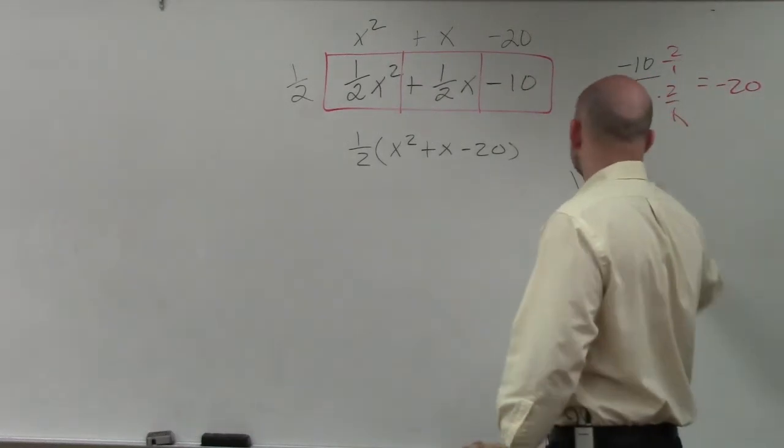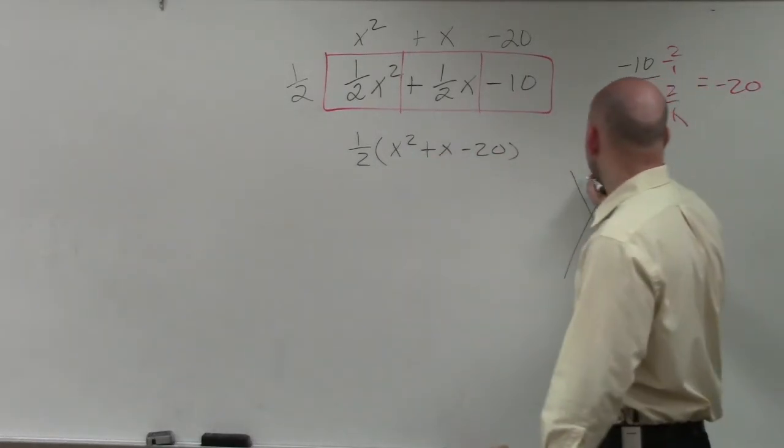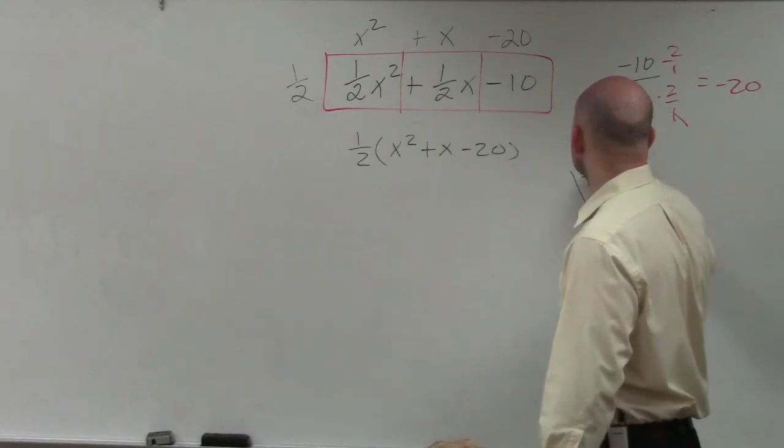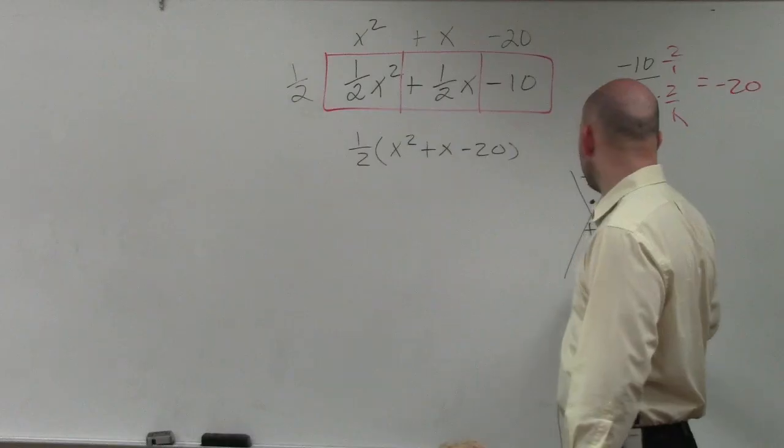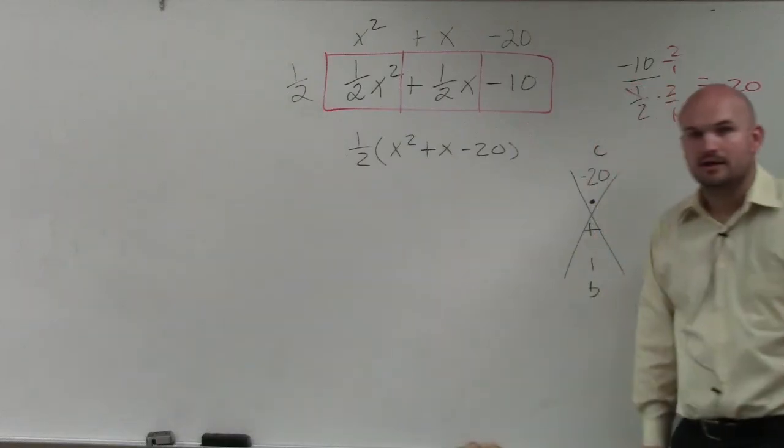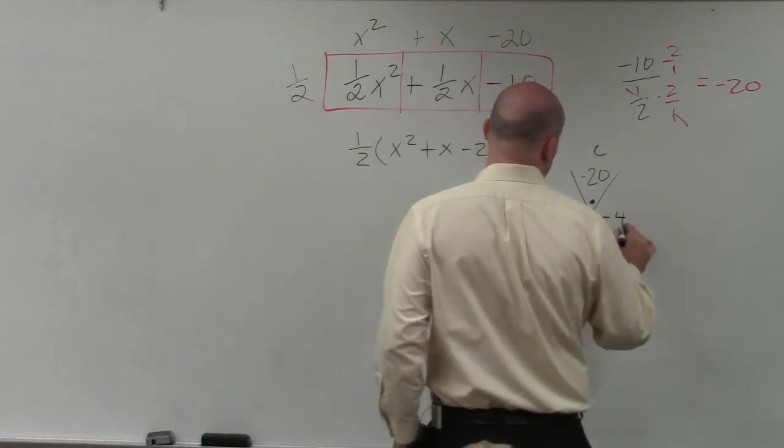So I'm not going to do the long method, but since my a is 1 in this case, inside the parentheses, I'm basically just asking what two numbers multiply to give you negative 20, but then add to give you a positive 1. Positive 5, negative 4.